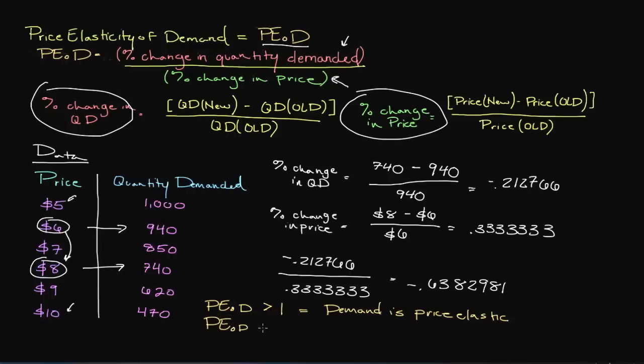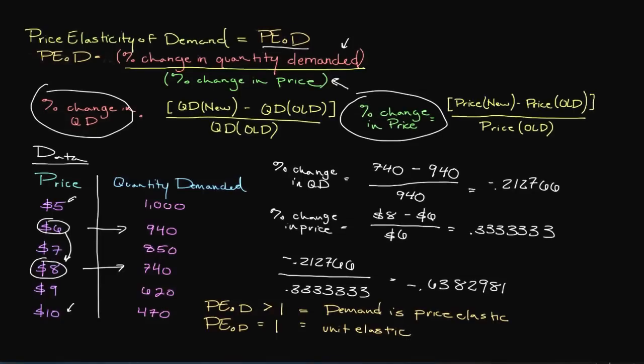Another option is if we have a price elasticity of demand which actually equals 1. And what this refers to, we call unit elastic. And what that means is that there is a, what we call a proportional increase between price as well as a decrease in demand. So if price goes up, there is a proportional decrease in the quantity demanded.